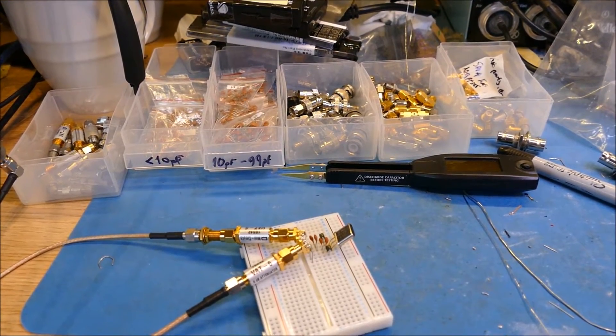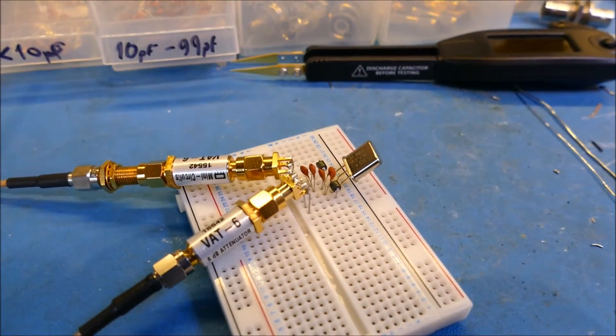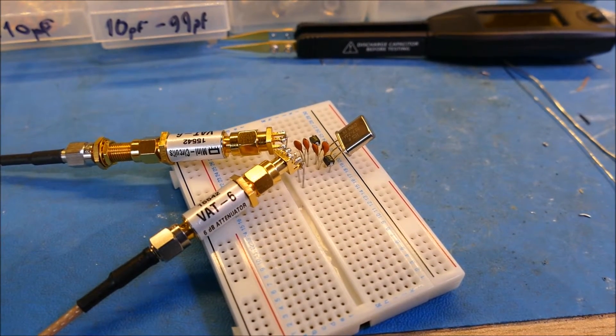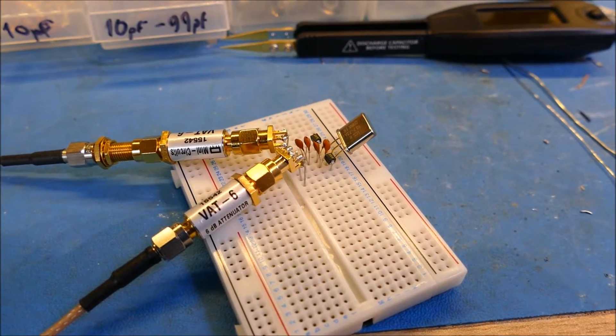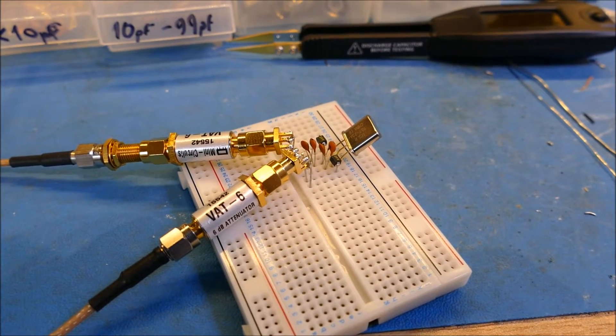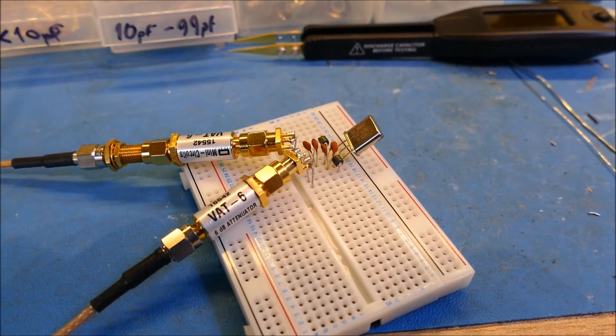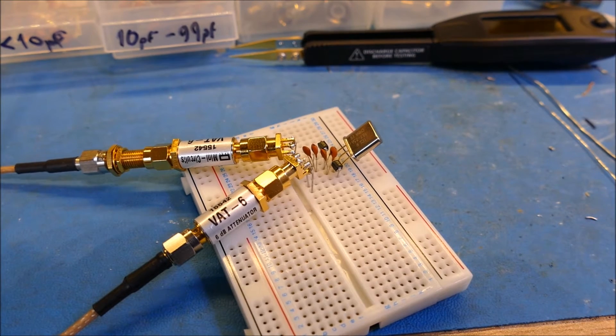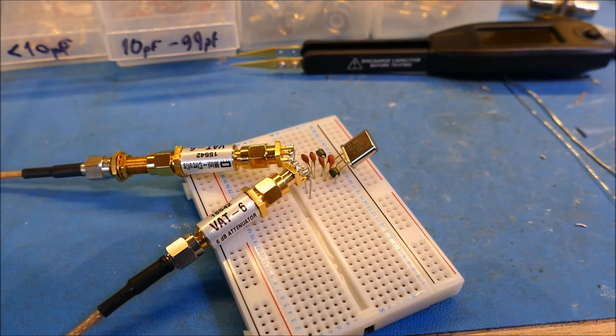Okay, so here we are back doing a tracking generator test on the Rigol DSA 815. What I've done is I've put in some 6 dB attenuators as we did before on the VNA, and I've actually normalized the DSA 815 just before the attenuators.